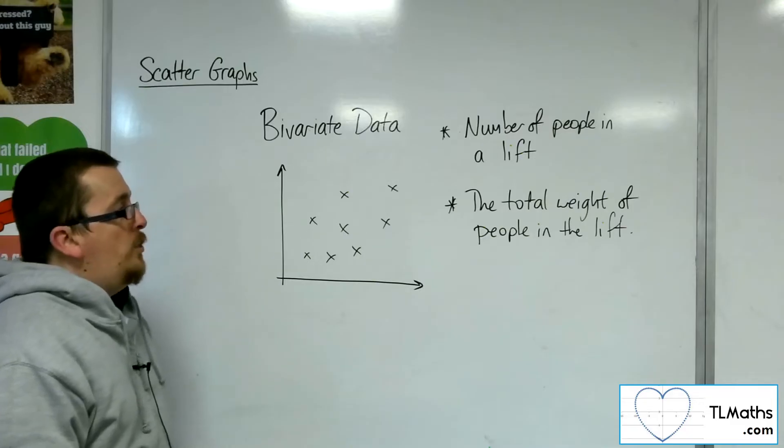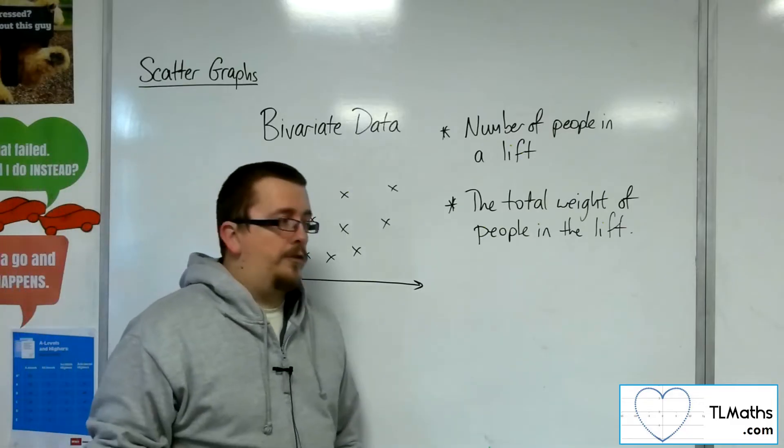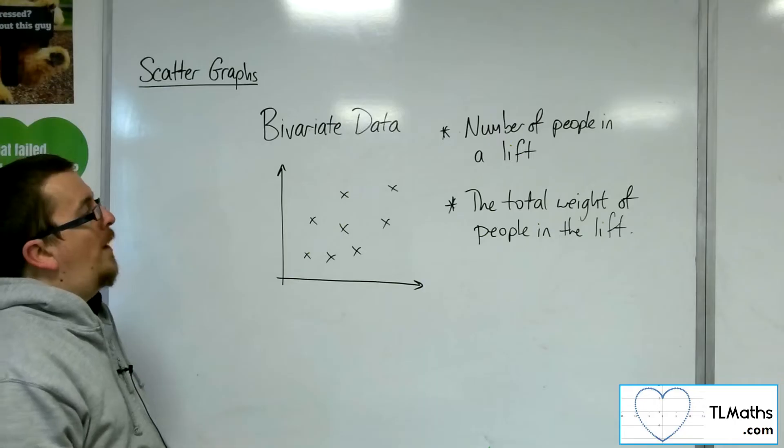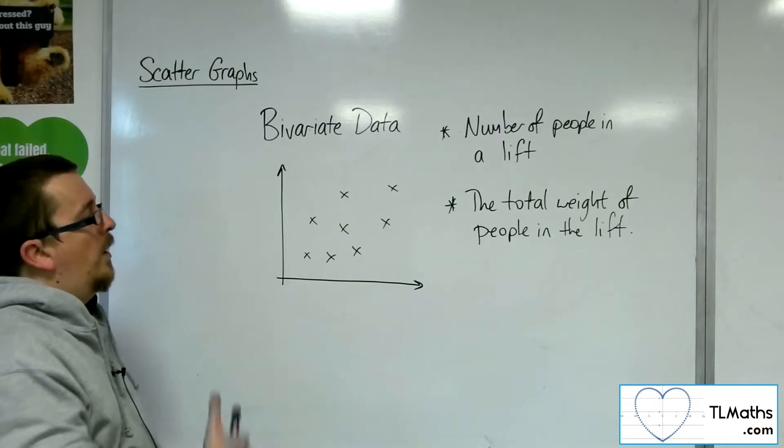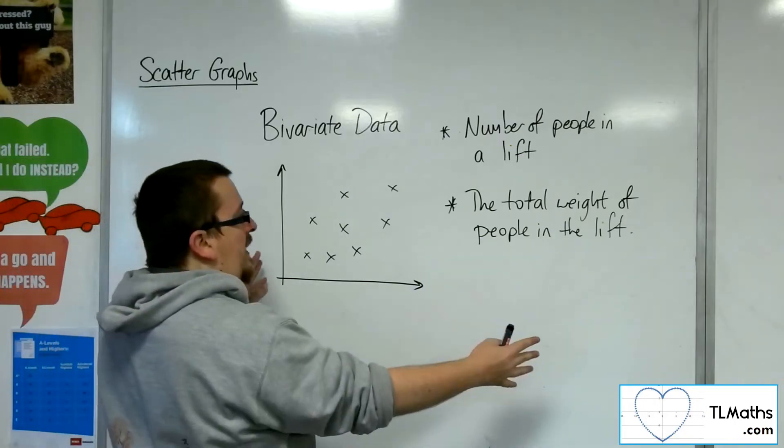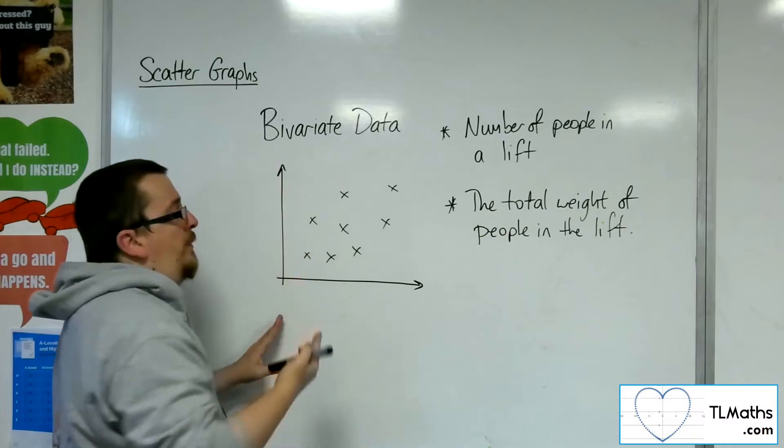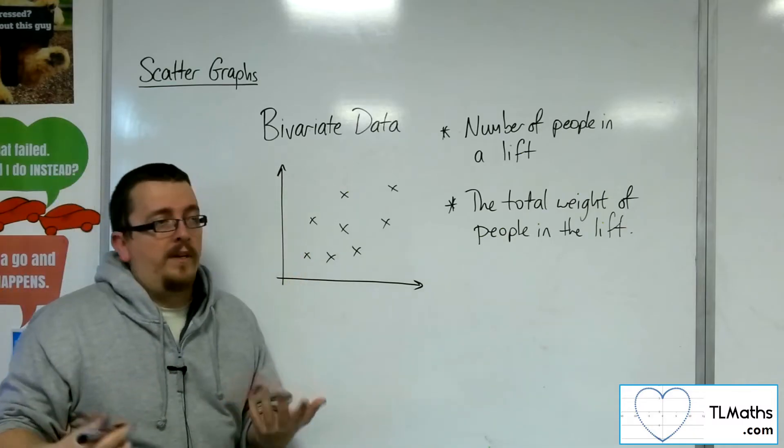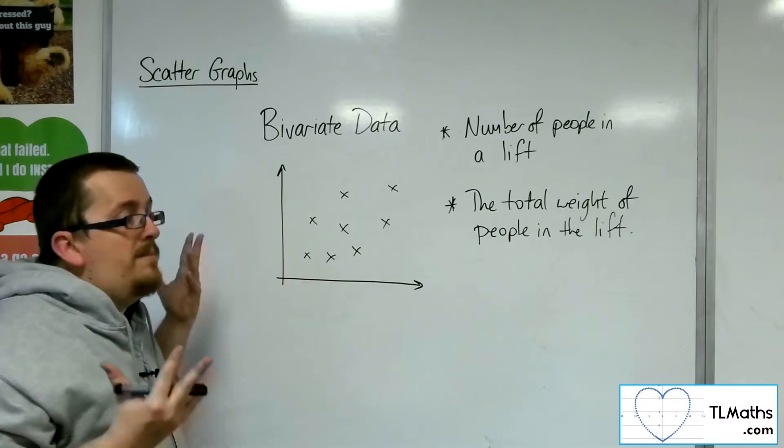So when you're plotting a scattergraph, which one of these should go on your horizontal x-axis and which one should go in the vertical y-axis? You might be thinking, well, it doesn't really matter.